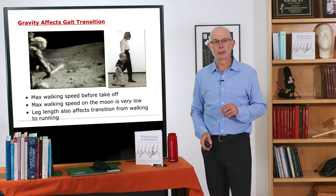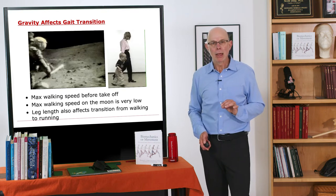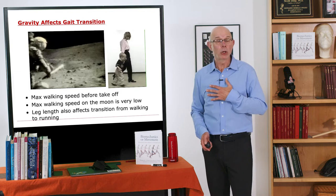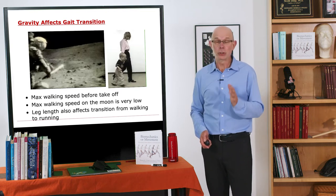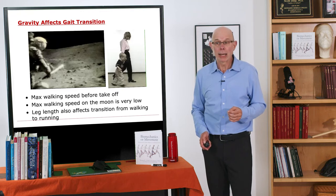Gravity also affects gait transitions. There's a striking example of this if you look at individuals when they first walked on the moon. We are trained to walk in one G, but when we got to the moon, they couldn't actually walk at a very high speed.